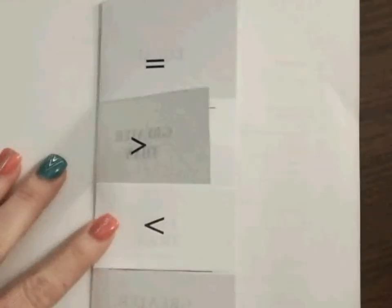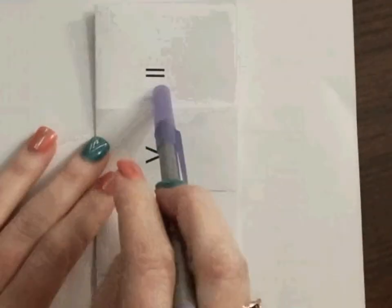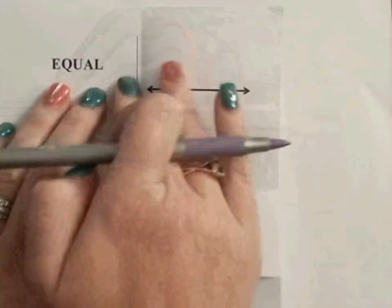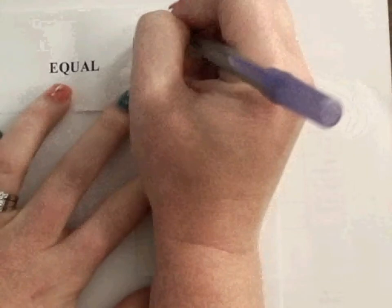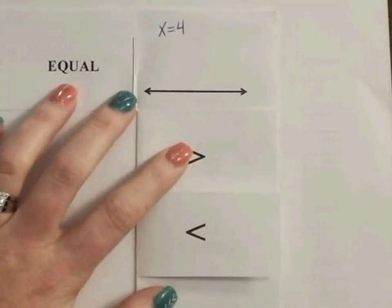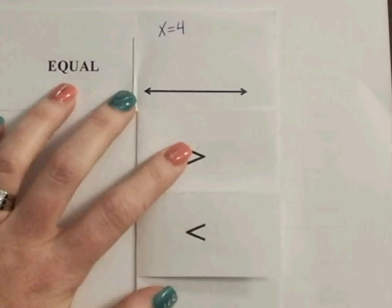We are going to start with the equal sign. If you open it up, it says equal. Now the problem that I'm going to give you is x equals 4. This is something that you would use whenever you have an equation because inequalities do not have equal signs. So this is a good example for equations.